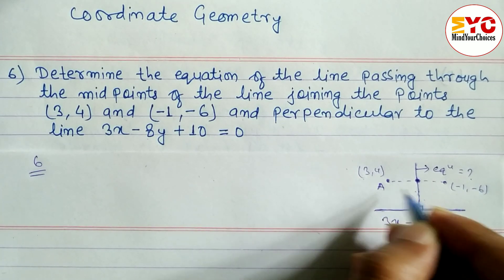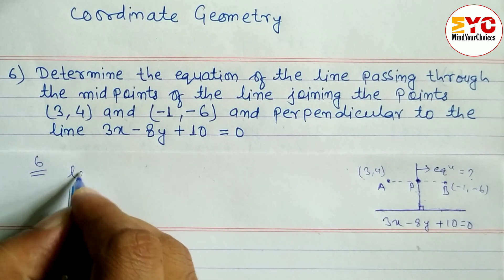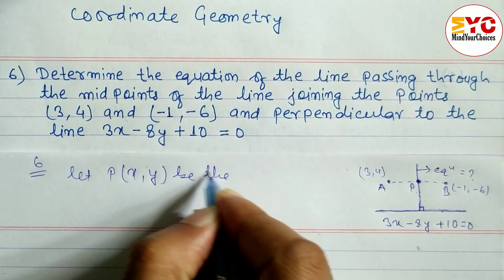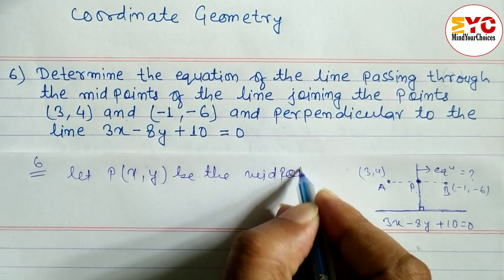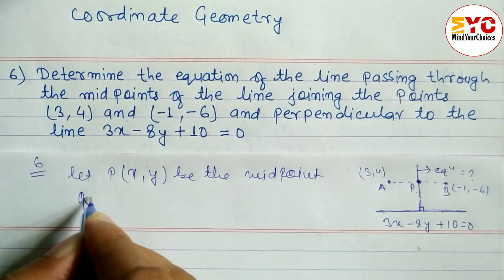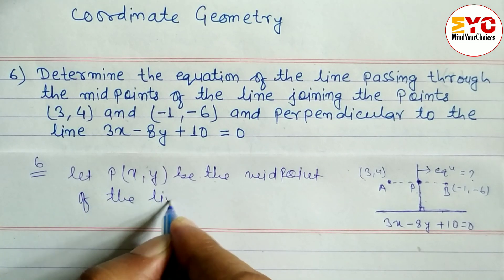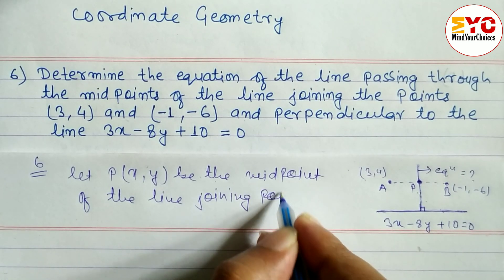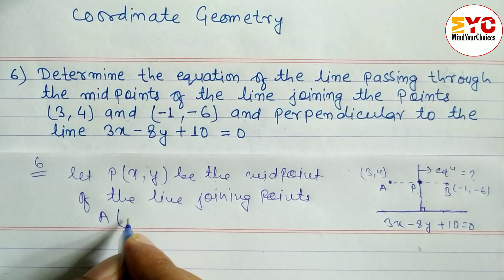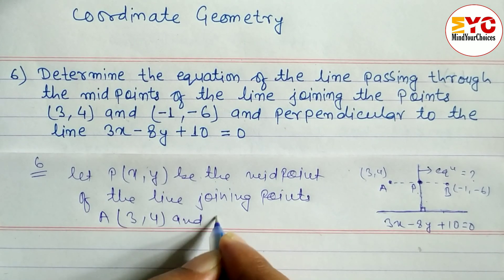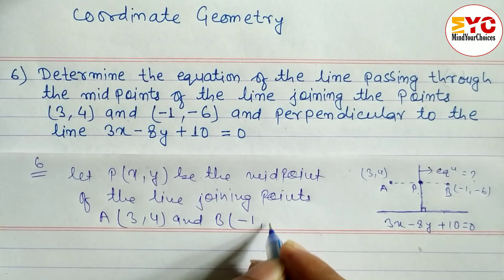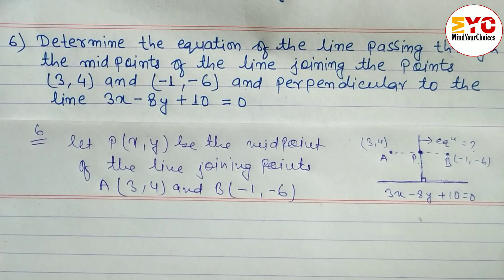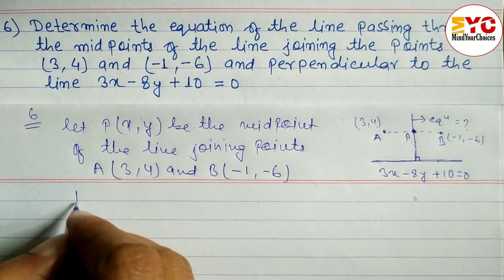Let A and B be the two points, and P be the midpoint. Let P(x, y) be the midpoint of the line joining A(3, 4) and B(-1, -6). Before starting the calculation, make sure you understand the question first.